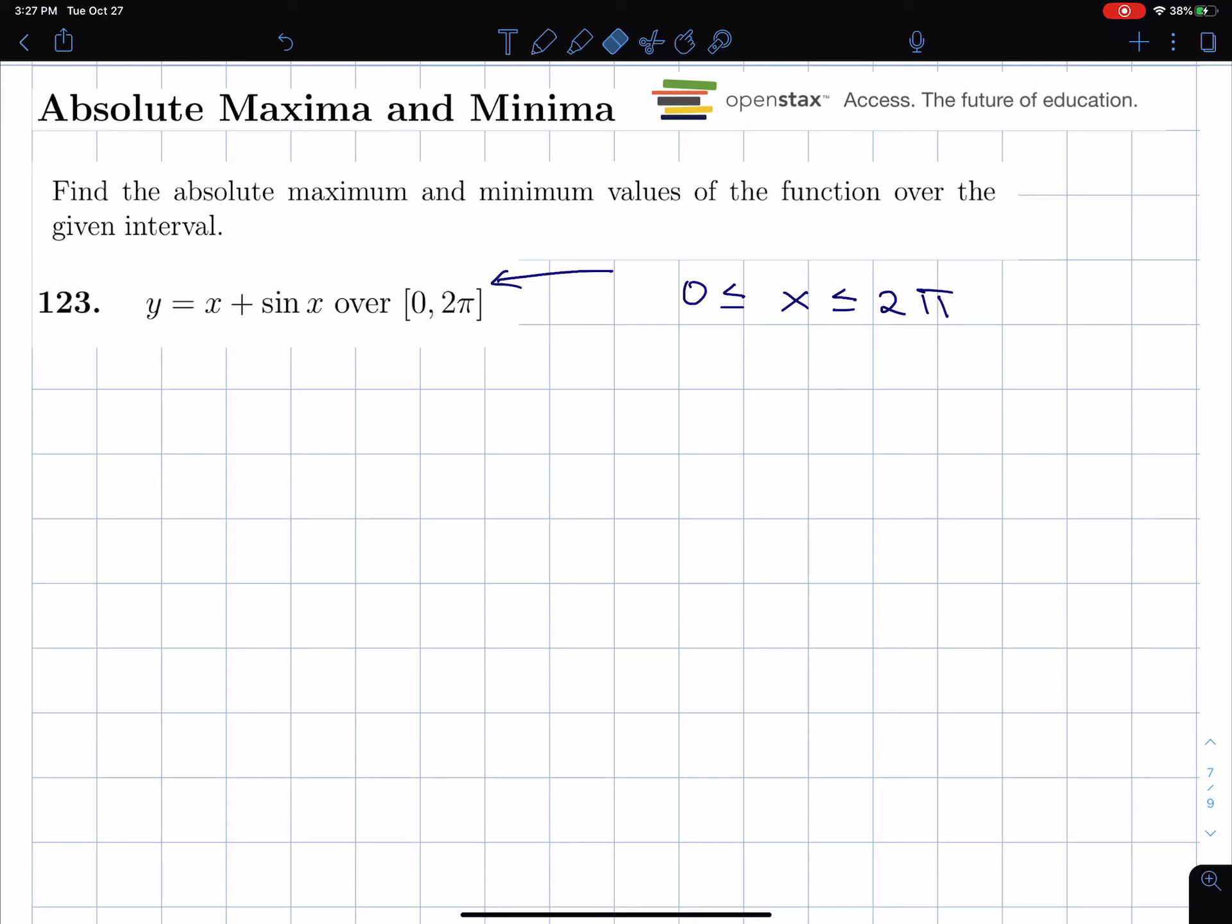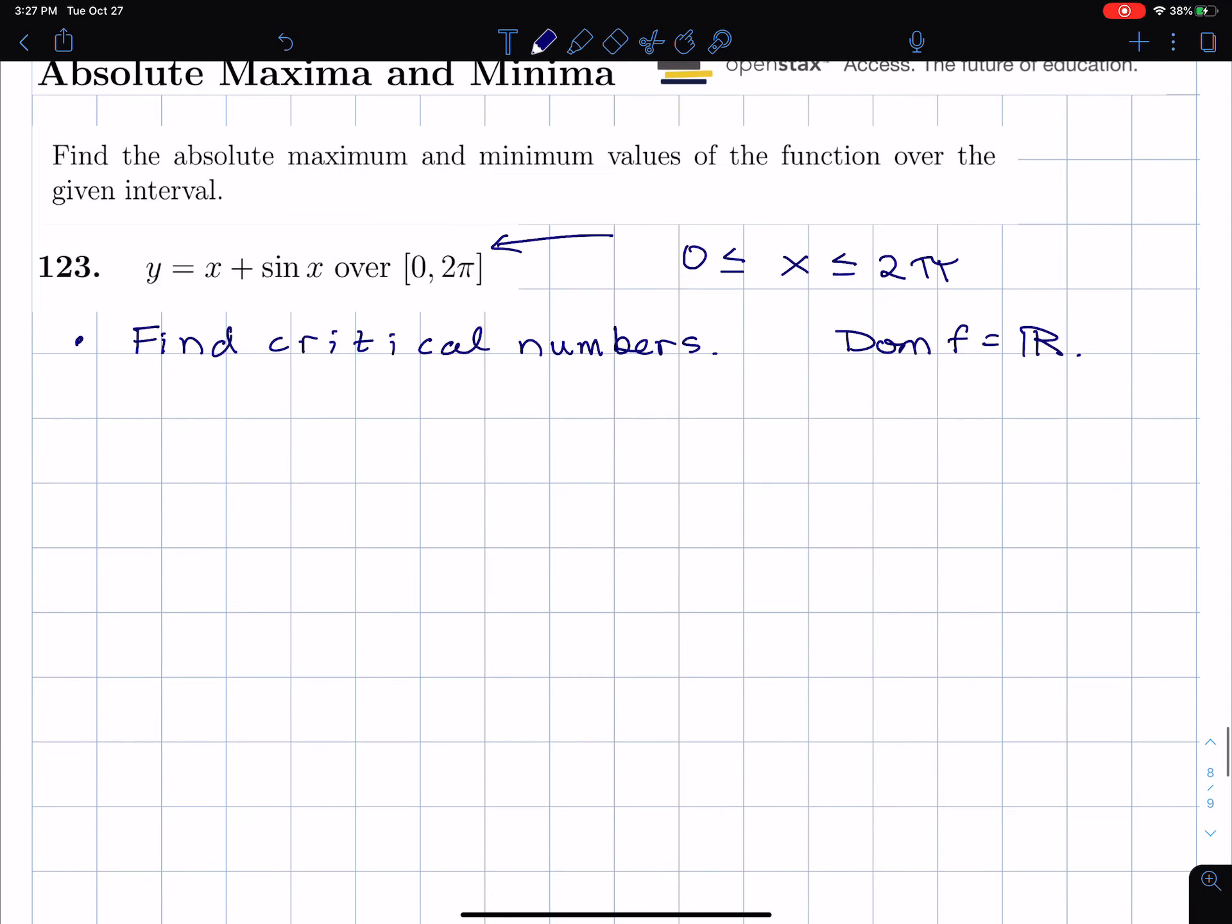Our function is continuous. That's something we could point out - x is continuous, sin x is continuous, their sum is continuous. So the first step is we're going to find critical numbers, and critical numbers are numbers in the domain of the function, but the domain of f is equal to all real numbers. So they're numbers in the domain of the function such that the derivative of that function is equal to 0, or the derivative of that number is undefined. Let me clarify - it's critical numbers where f prime of c equals 0, or f prime of c is undefined.